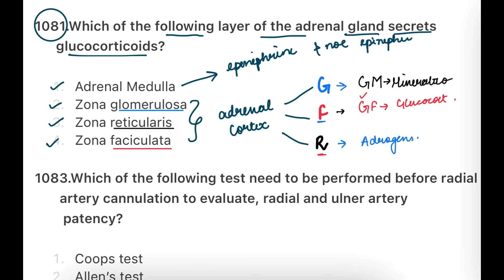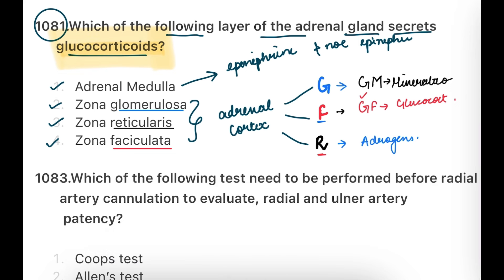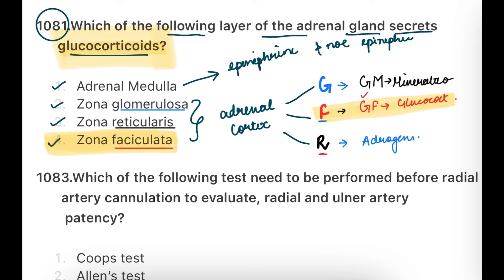So here the question asks about glucocorticoids — who is secreting them. The answer is the Fasciculata layer. Glucocorticoids are also called the wonder drug; cortisol is one example. So the adrenal cortex, specifically the Fasciculata layer, secretes the wonder drug — cortisol.